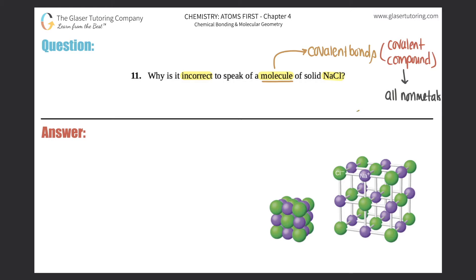So examples would be H2O. Hydrogen and oxygen are both nonmetals on the periodic table. Ammonia, which is NH3. That's a covalent compound. So we can classify that as a molecule because it's all nonmetals.